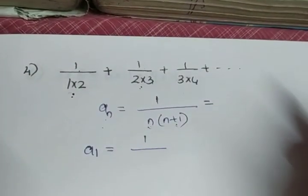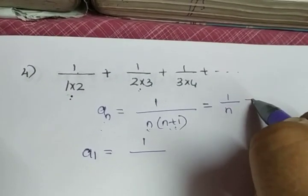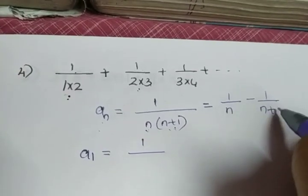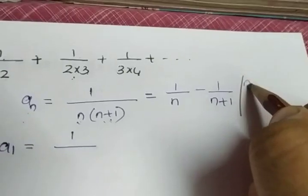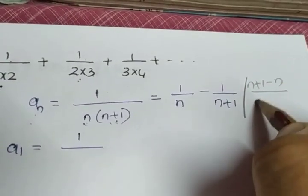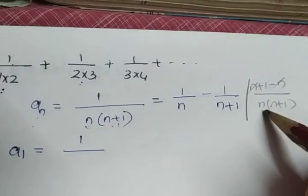We are going to do this question in another way. Instead of 1 by n into n plus 1, I can rewrite it as 1 by n minus 1 by n plus 1. Because if we take the LCM, what we get is n plus 1 minus n by n into n plus 1. So n gets cancelled giving you 1 by n into n plus 1.